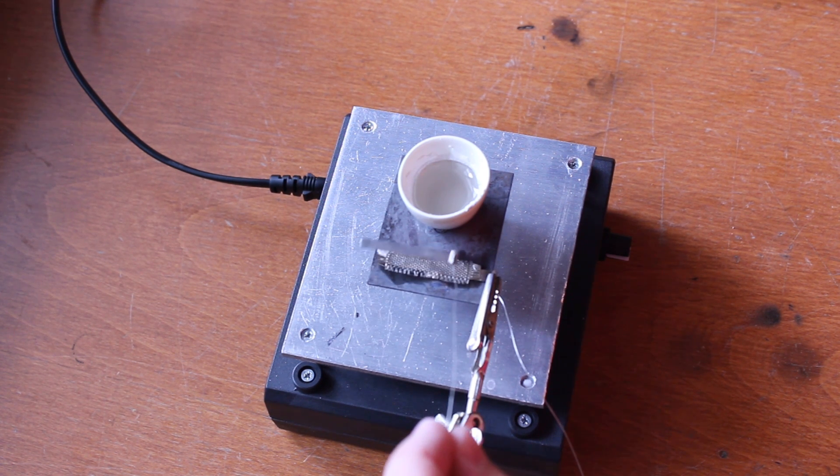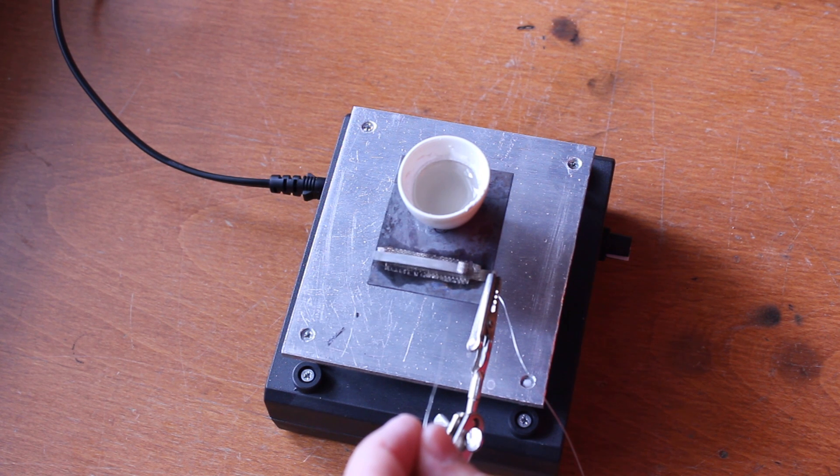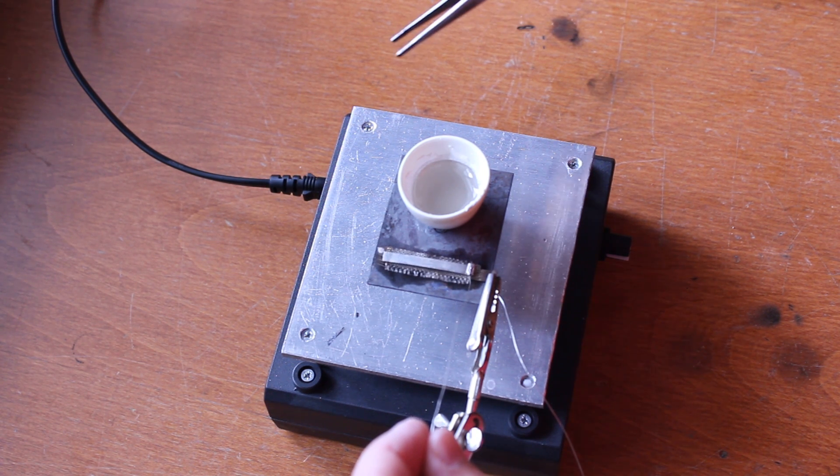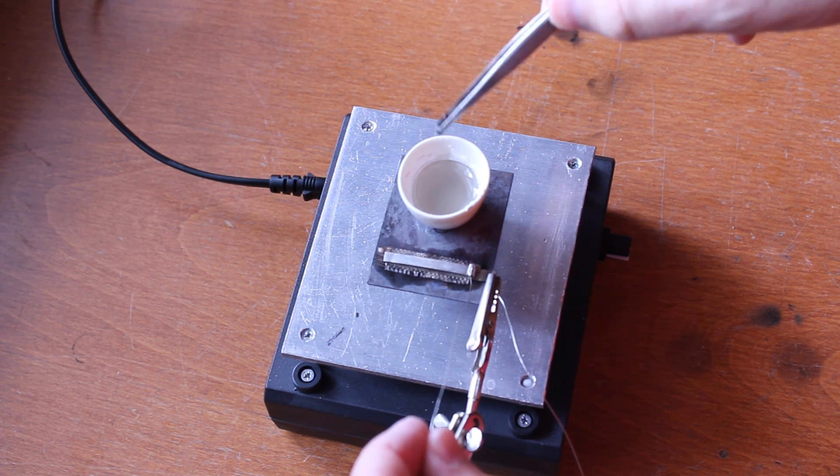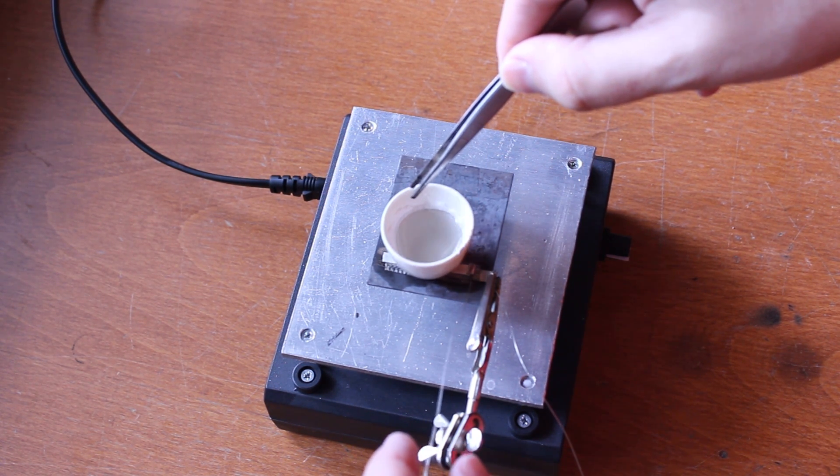Magnesium, on the other hand, requires something to hold it in place. Something like a crucible full of molten salt. What could possibly go wrong?